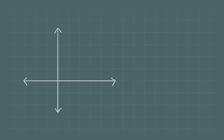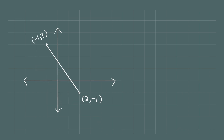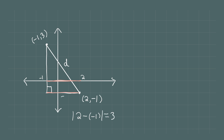For the next example, let's find the distance between the point (-1, 3) and the point (2, -1). We draw the line segment connecting them and create a right triangle with this segment as the hypotenuse, calling the distance d. The bottom leg runs from x-coordinate -1 to x-coordinate 2, so its length is the absolute value of 2 minus negative 1, which equals 3.